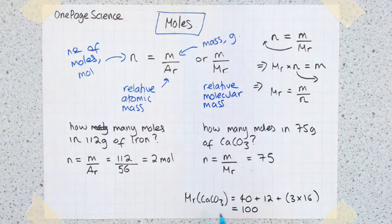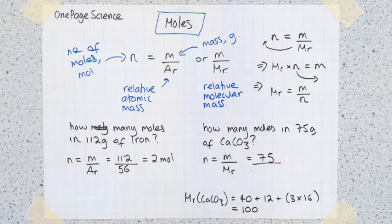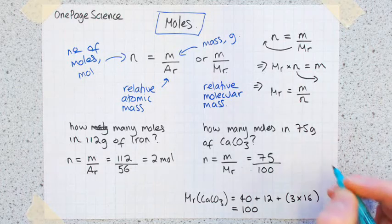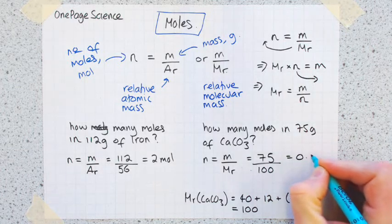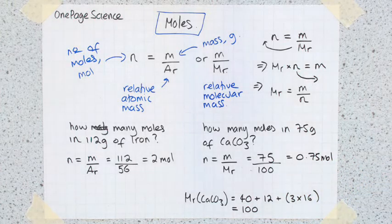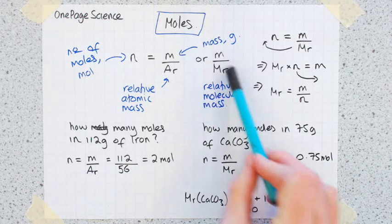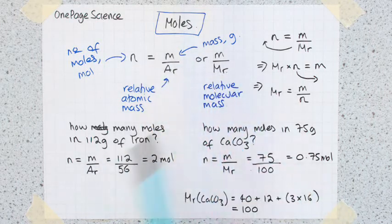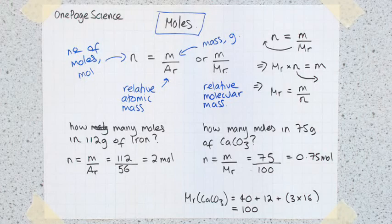So we've now worked out our Mr. Put that into our equation: 75 divided by 100 is 0.75 moles. So that's a quick intro there on how you use this equation to work out moles if you've got relative atomic mass or if you have to work out the relative molecular mass.